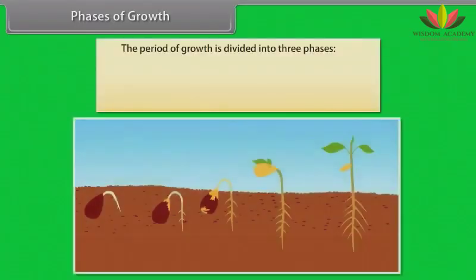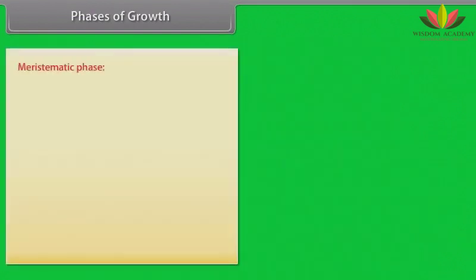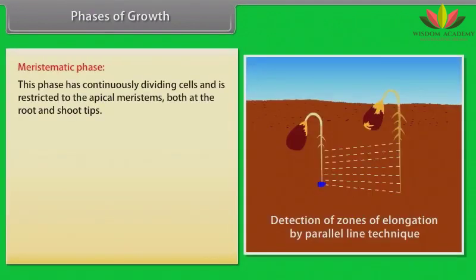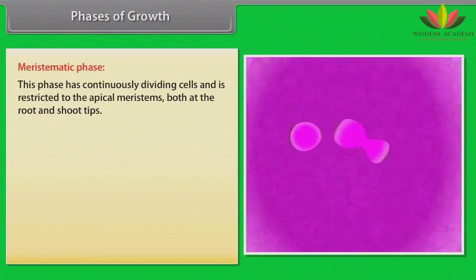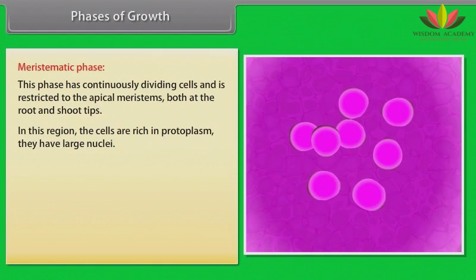The period of growth is divided into three phases: meristematic, elongation and maturation. The meristematic phase has continuously dividing cells and is restricted to the apical meristems, both at the root and shoot tips. In this region, the cells are rich in protoplasm. They have large nuclei.